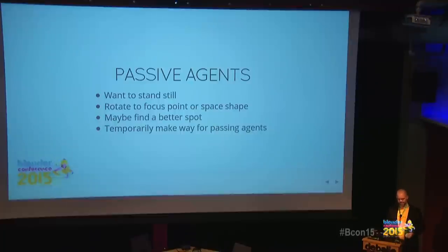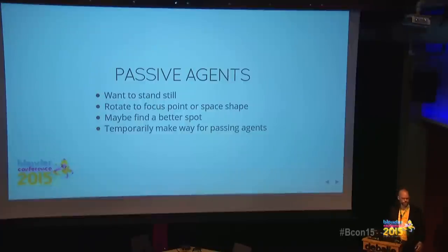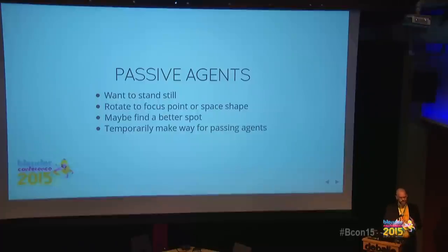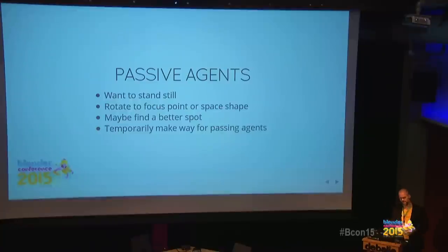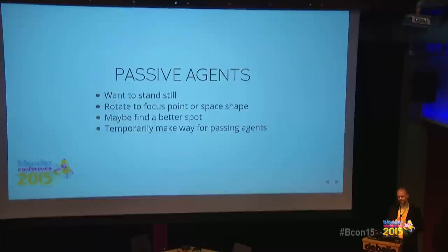Passive agents want to stand still and rotate toward a focus point — maybe a guitar player or the elevator floor panel. If it gets really cramped, they'll rotate for the space they have and the focus point becomes less important. They look around for a better spot and temporarily make way for active agents to pass, giving up their own comfort to let somebody through, knowing once they've passed there's enough space to return.